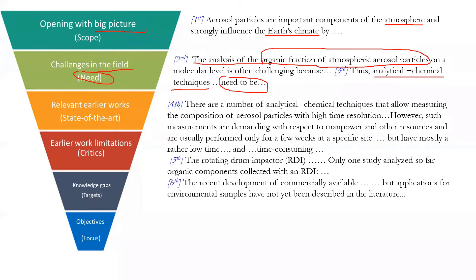Then you further narrow down by listing the relevant earlier works. For example, you start with: 'there are a number of techniques.' You are working on this area, but that doesn't mean nobody else did it. Everything has been explored by researchers — engineers or scientists. Do not say nobody did this; that's not what the literature review is for. Literature review means reviewing the existing work. But you want to criticize the limitations of early work — that's what 'however' is for: 'however, such measurements are demanding with respect to manpower and other resources.' That means they have limitations.